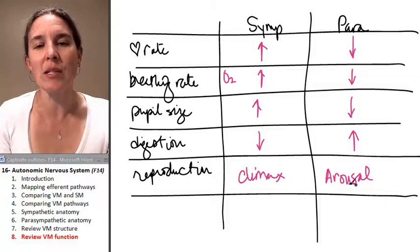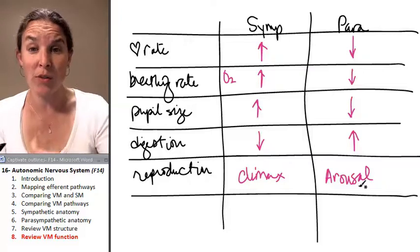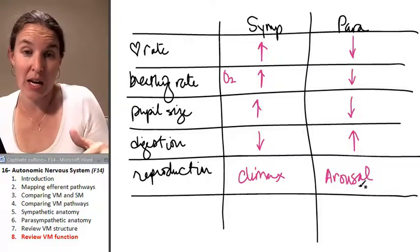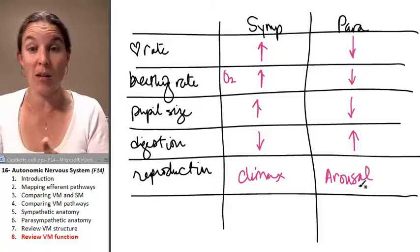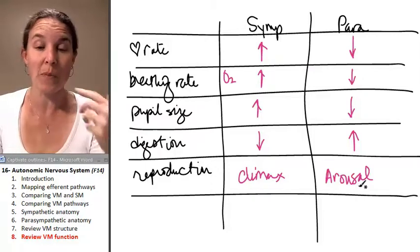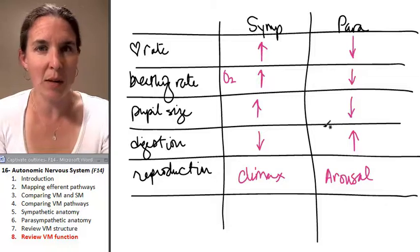This comes into play when you're talking about erectile dysfunction because you can have arousal if your parasympathetic nervous system is fine and no climax, or you could potentially be able to climax but not be able to get aroused depending on who's got issues. Just get a penile implant.